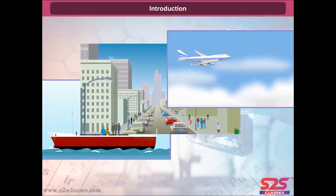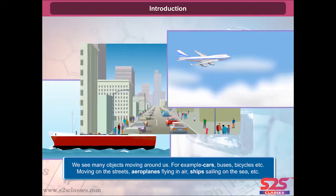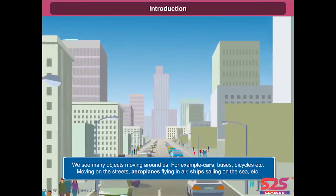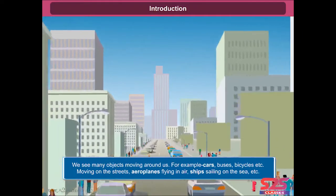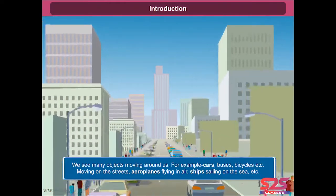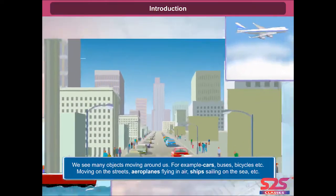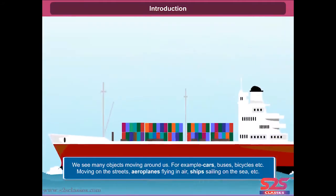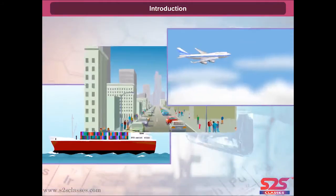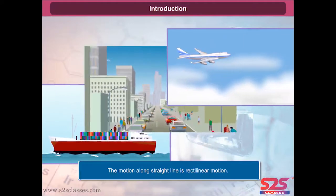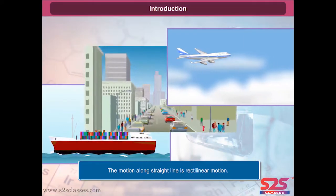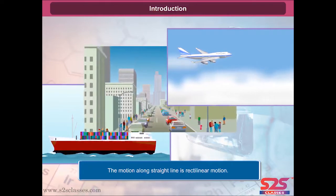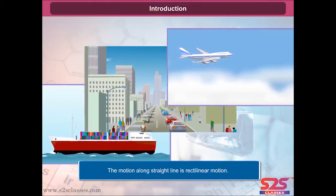Motion in a straight line: we see many objects moving around us, for example cars, buses, bicycles moving on the streets, aeroplanes flying in the air, ships sailing on the sea. In all these examples, objects change their positions with time along a straight line. This type of motion is called rectilinear motion.